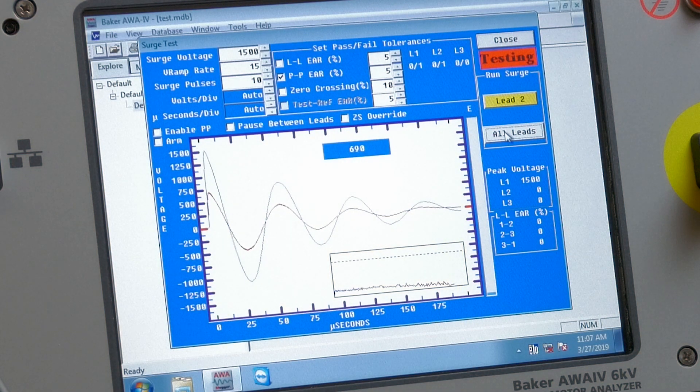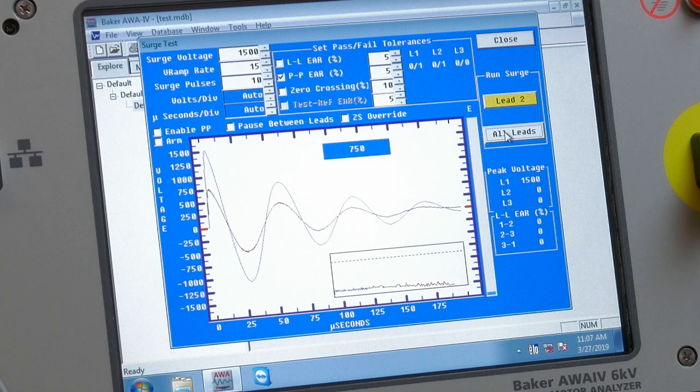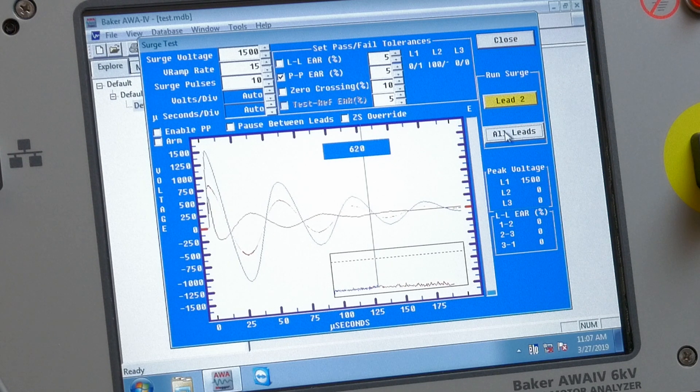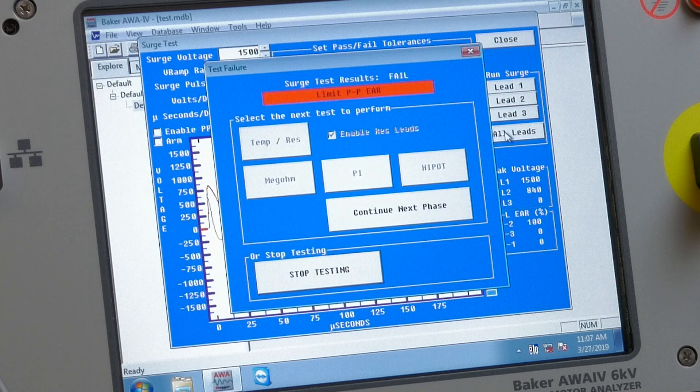If the winding insulation is weak, a small discharge will occur which causes the voltage waveform of the winding to change. Baker Static Analyzers detect and report this change.